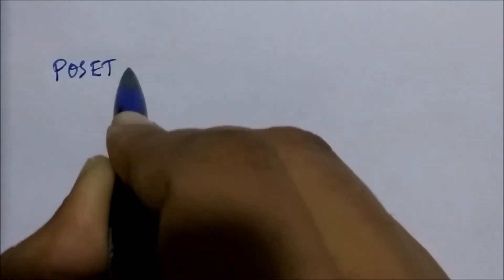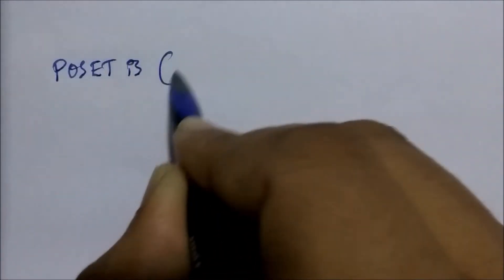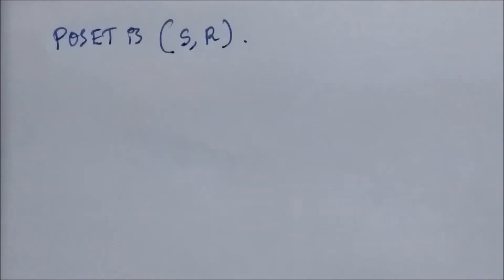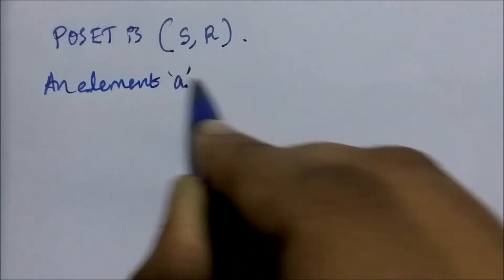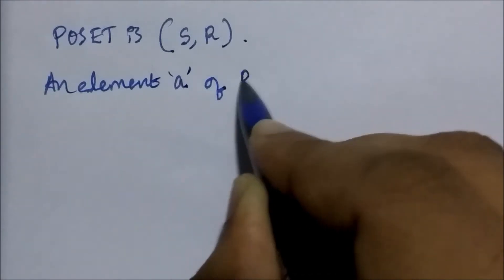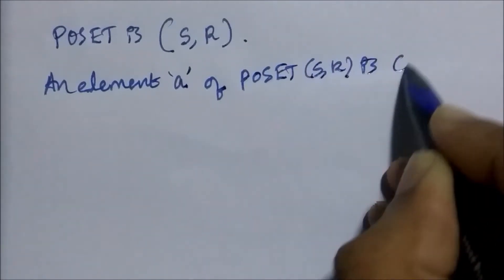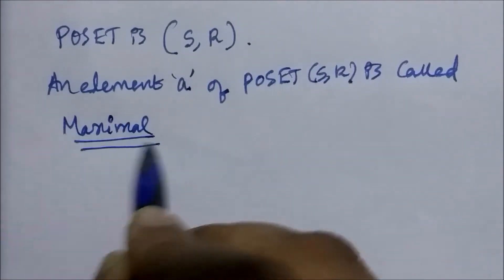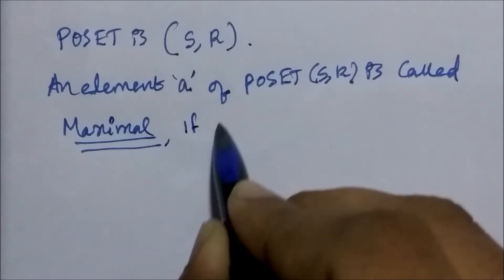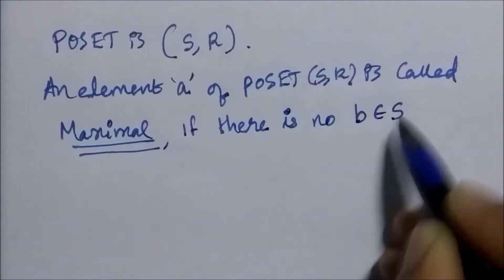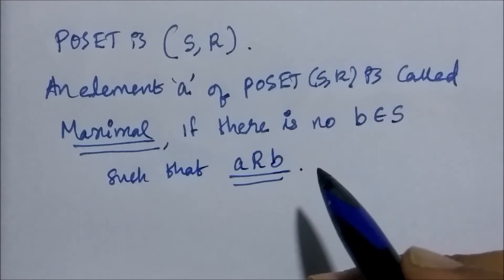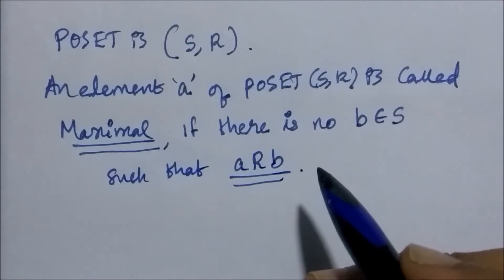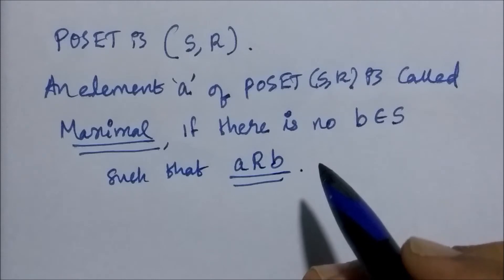Suppose the poset that we are considering is (S, R), where S is a set and R is a partially ordered relation on the set S. Now an element a of the poset (S, R) is called maximal if there is no element b belonging to the set S such that a is related to b.